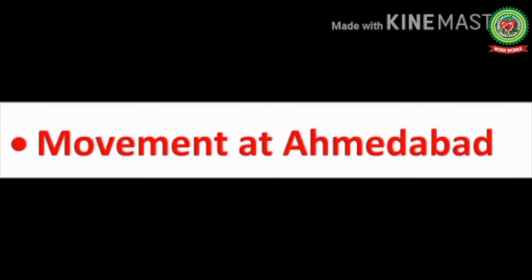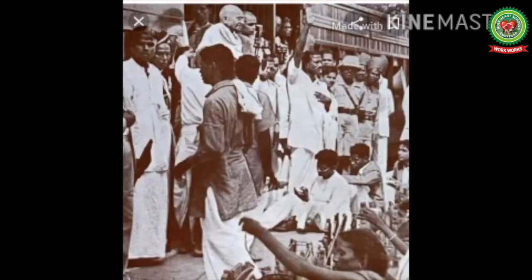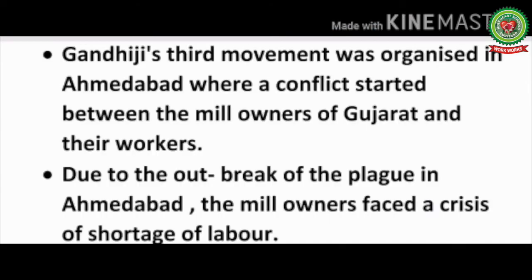Mahatma Gandhi's third movement was at Ahmedabad, where he fought for the rights of the mill workers who were not getting appropriate wages. A conflict arose between the mill owners of Gujarat and their workers. Due to the outbreak of plague in Ahmedabad, the mill owners faced a crisis of labor shortage as workers left the town.